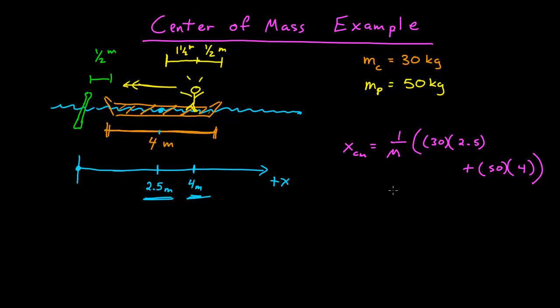And that's all over the total mass, which is 80. So if I calculate this out here, I have 30 times 2.5, so that's 75, plus 50 times 4, so that's 200 all over 80. I put that in my calculator, I get 3.44 meters. So that's the center of mass, and that is a constant.